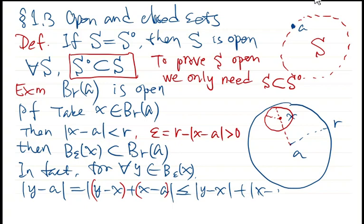This will be not greater than the norm of y minus x plus the norm of x minus a. But because y is in the ball centered at x with radius epsilon, the norm of y minus x is less than epsilon.